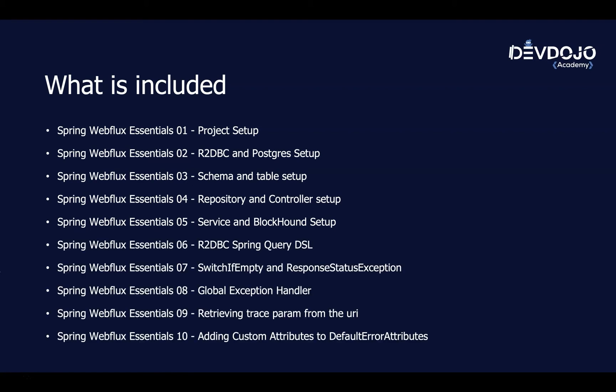Then we are going to go further and talk about the Query DSL, switch if empty, response status, global exception handler, how to retrieve the trace param from the URI, and adding custom attributes to the default error attributes — so the global exception handler.